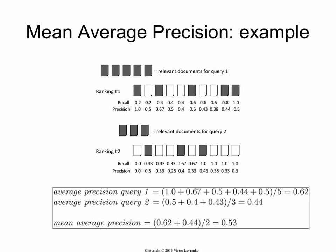Why is it biased towards the top of the ranking? It seems like just a flat average, but we'll look at that in a couple of slides. Mean average precision is basically your go-to metric. Anytime you have a system that generates a ranking, your knee-jerk reaction should not be precision, not recall, not F1 — use mean average precision. It's a really good metric that's been refined over several decades.